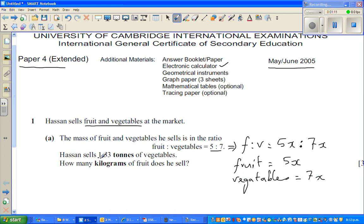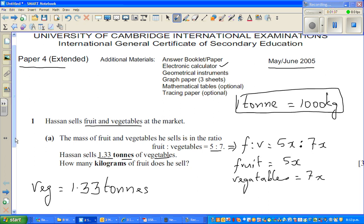He sells 1.33 tons of vegetables. So vegetables is 1.33 tons. Now you should know one ton is 1000 kgs. So let's use that information.